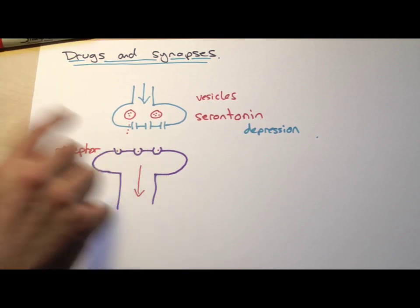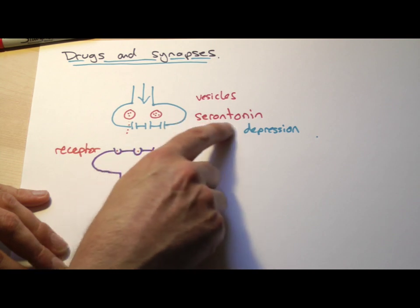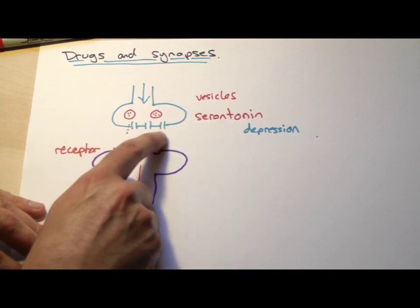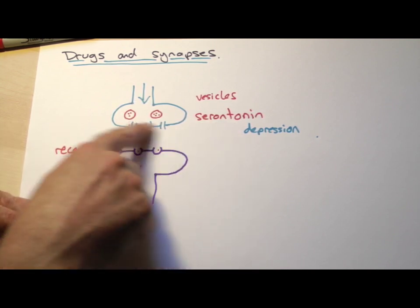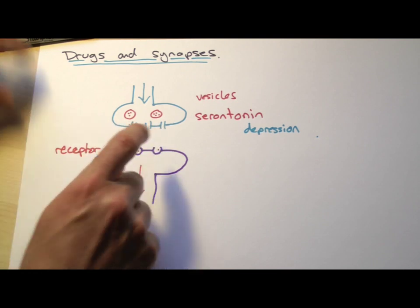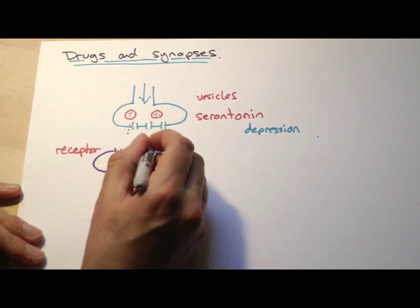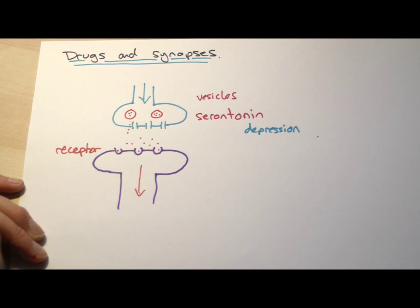Now, what we really need to do, in the case of someone who's got depression and has got low serotonin levels, we need to try and keep as much of this serotonin in this synapse as possible, because we're giving ourselves more of a chance to fill these receptor sites.